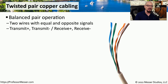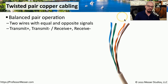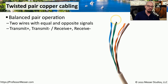For our ethernet networks, we very commonly use twisted pair copper cabling. Inside that ethernet cable you can see we have four pairs. Those four pairs have different colors: solid blue, blue and white, solid green, green and white, solid orange, and orange and white.